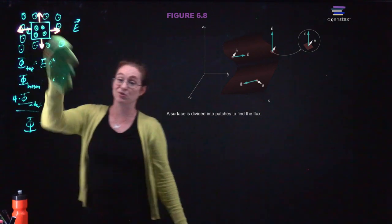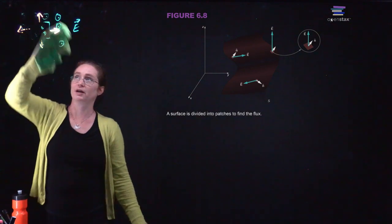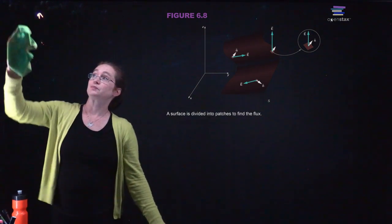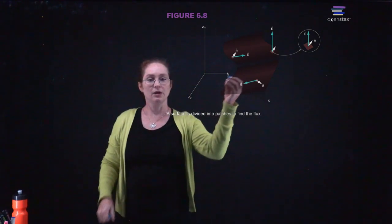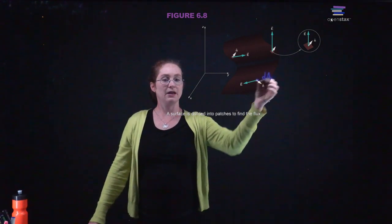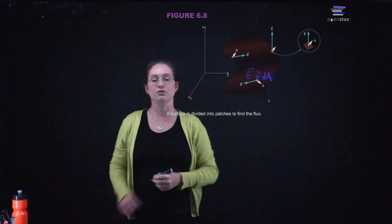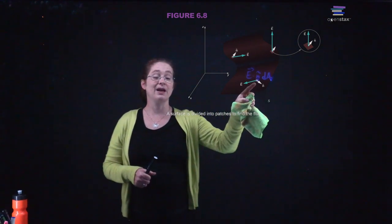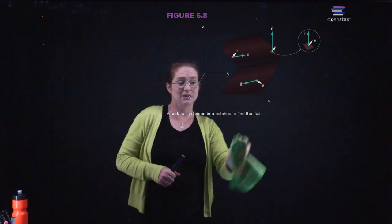If you need to integrate, you divide the surface into little patches of area. You figure out an expression for those patches, look at the normal vector at each point, and know the functional form of the electric field everywhere. Then you integrate over the whole surface. It can get rather messy.